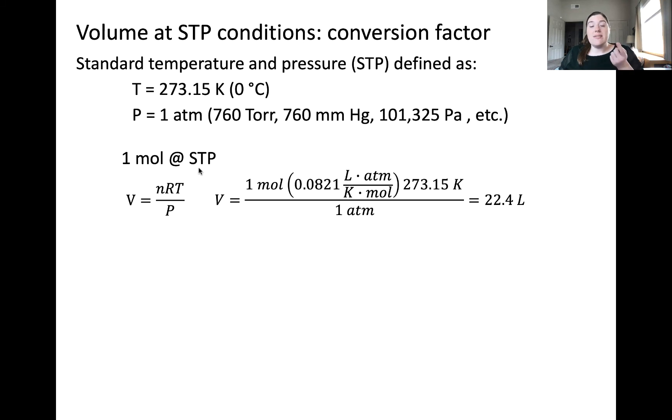That means we know the quantity of gas, the temperature of the gas, and the pressure. We can calculate the volume, therefore, to be 22.4 liters. The meaning of this value is that one mole of an ideal gas, no matter what its identity is, will occupy a volume of 22.4 liters.